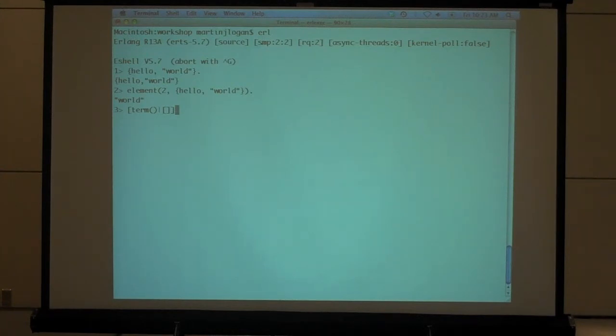So every list you ever use has an empty list implicitly defined in the end, and you'll see why as we get into, well, the real reason why is this mathematical business that all this is underpinned on, but it has a practical purpose as well.